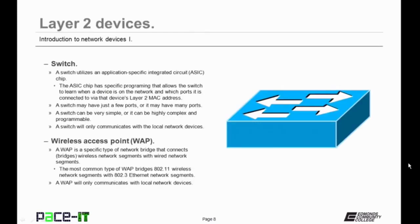The first Layer 2 device we're going to talk about is the switch. A switch utilizes an application-specific integrated circuit chip — an ASIC chip. The ASIC chip has specific programming that allows the switch to learn when a device is on the network and which ports it is connected to via that device's Layer 2 MAC address. That's what makes a switch a Layer 2 device. A switch may have just a few ports or many ports, kind of like the hub.